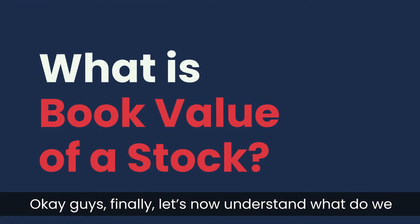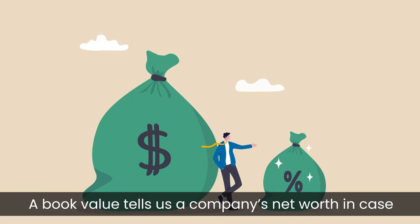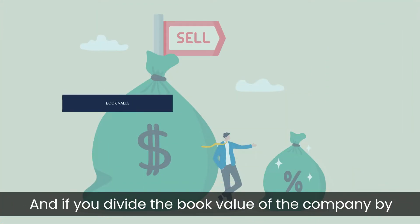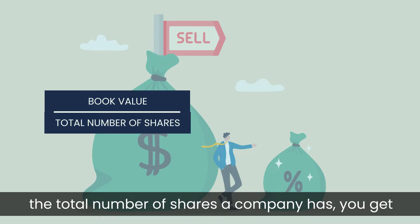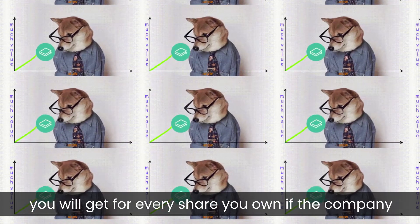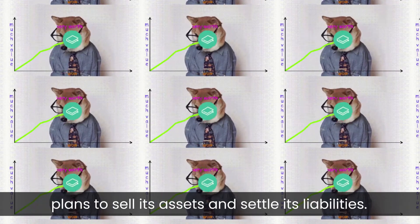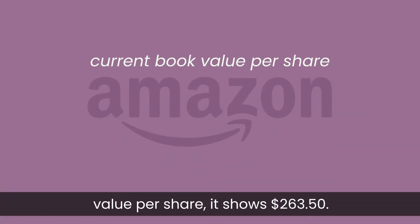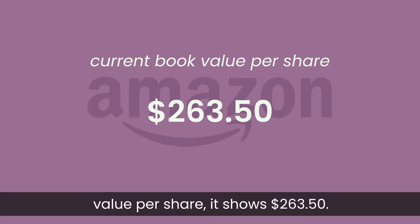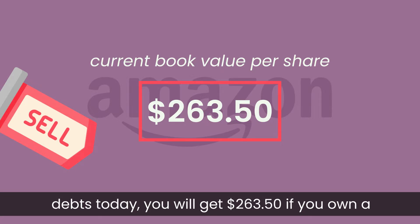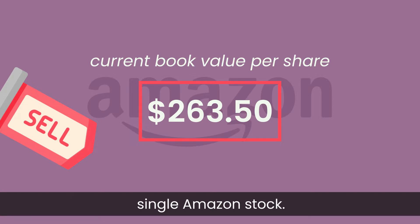Finally, let's understand what we mean by the book value of a stock. Book value tells us a company's net worth in case the company plans to sell all its assets and pay off all its debt and liability. And if you divide the book value of a company by the total number of shares a company has, you get what is called book value per share. Book value per share indicates how much money you will get for every share you own if the company plans to sell its assets and settle its liabilities. For example, Amazon's current book value per share is $263.5, meaning if Amazon sells its assets and settles its debts today, you will get $263.5 for every single Amazon stock you own.